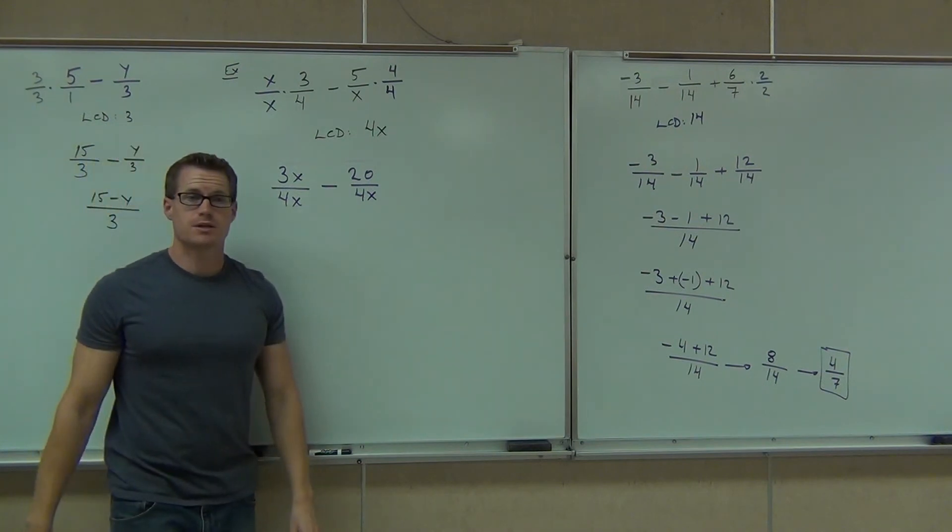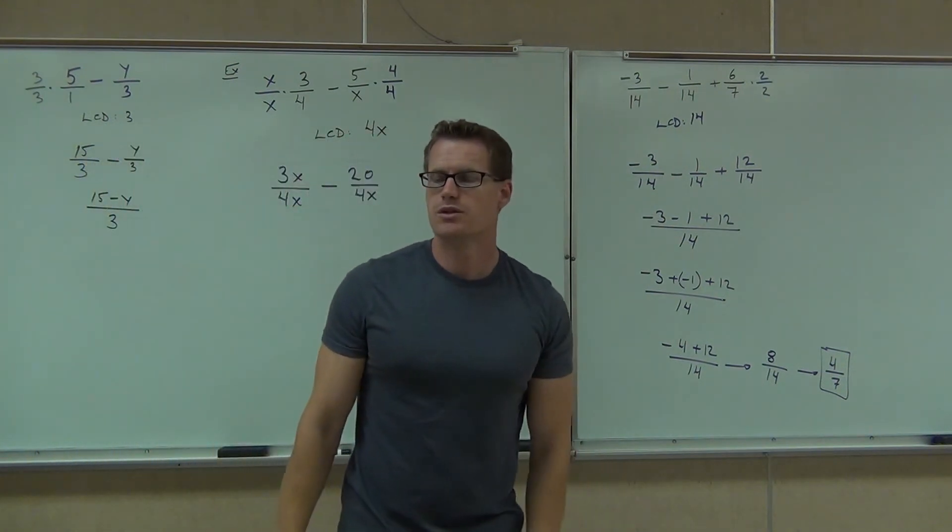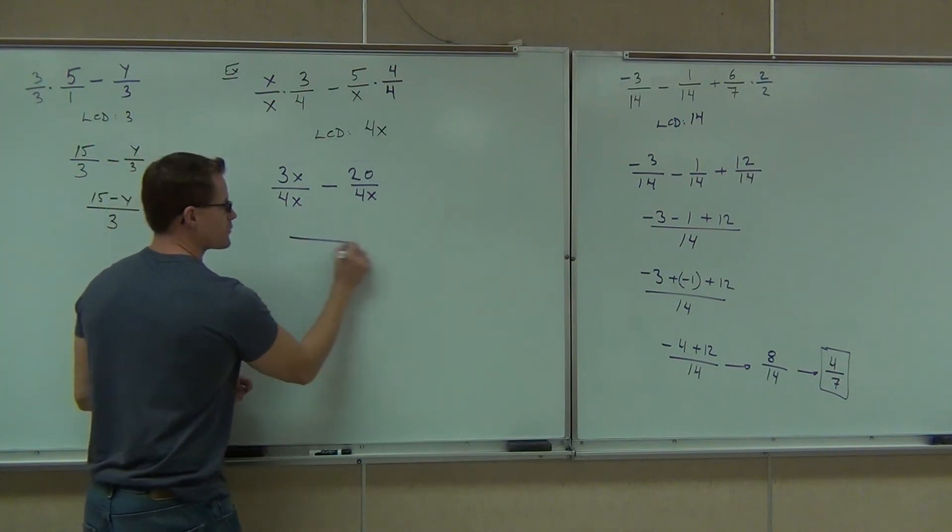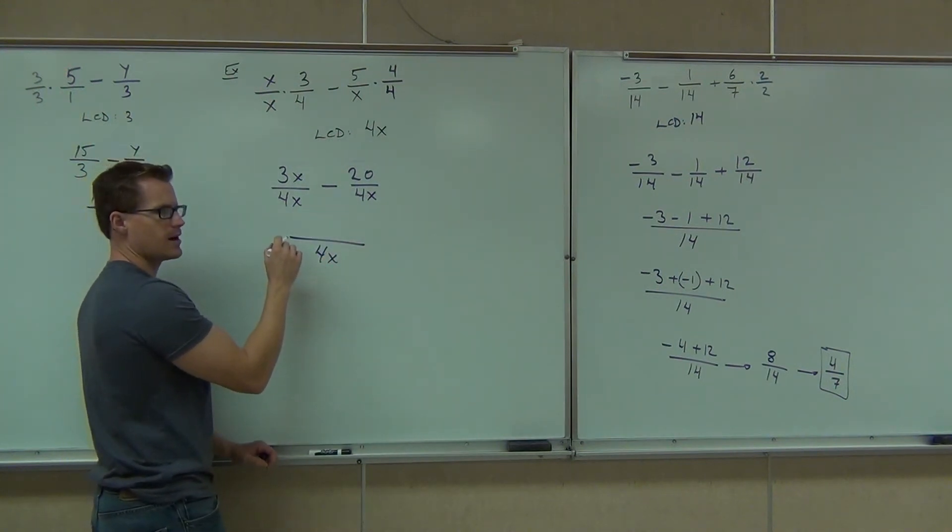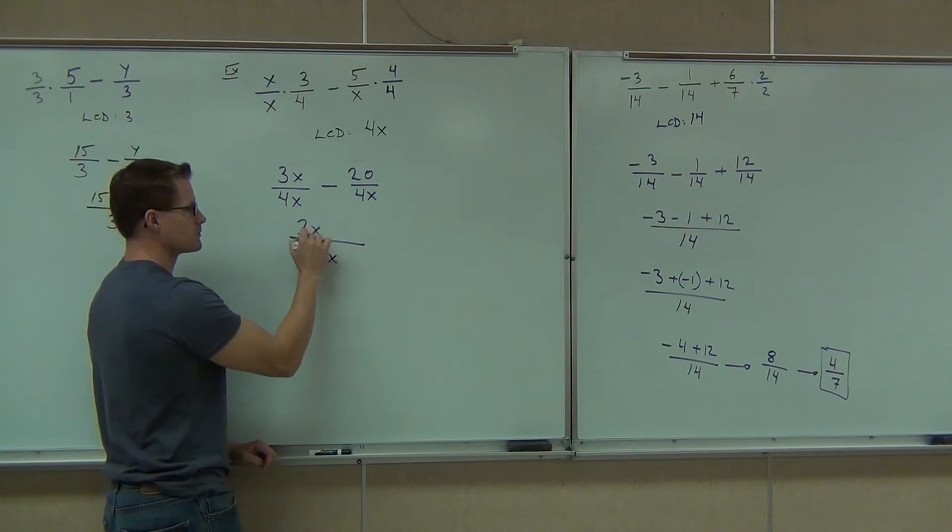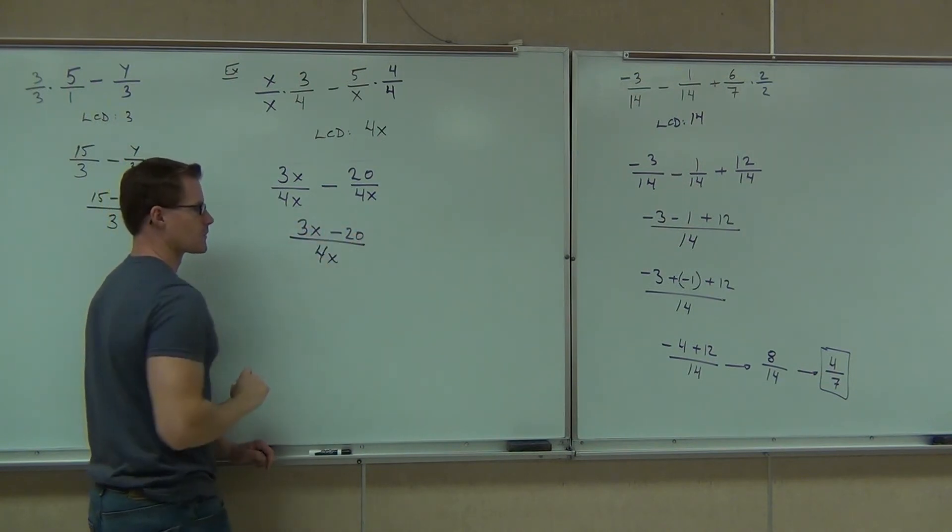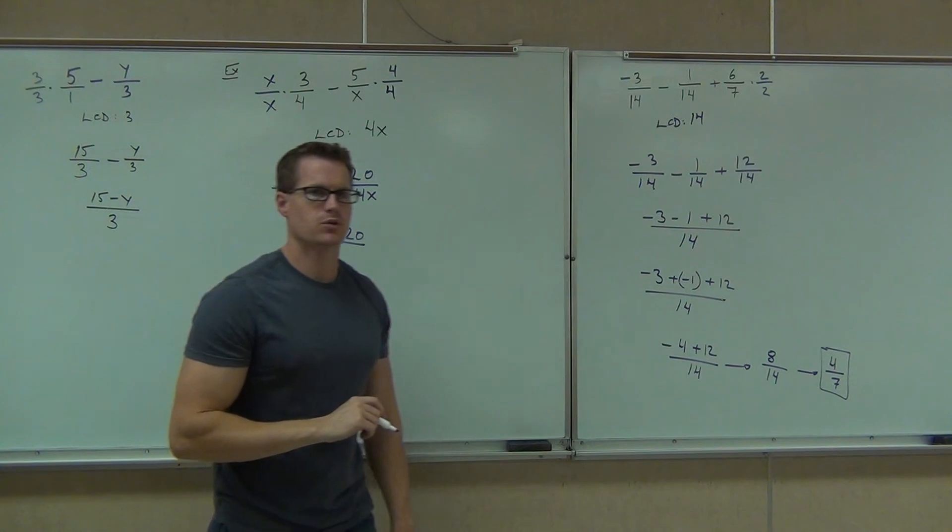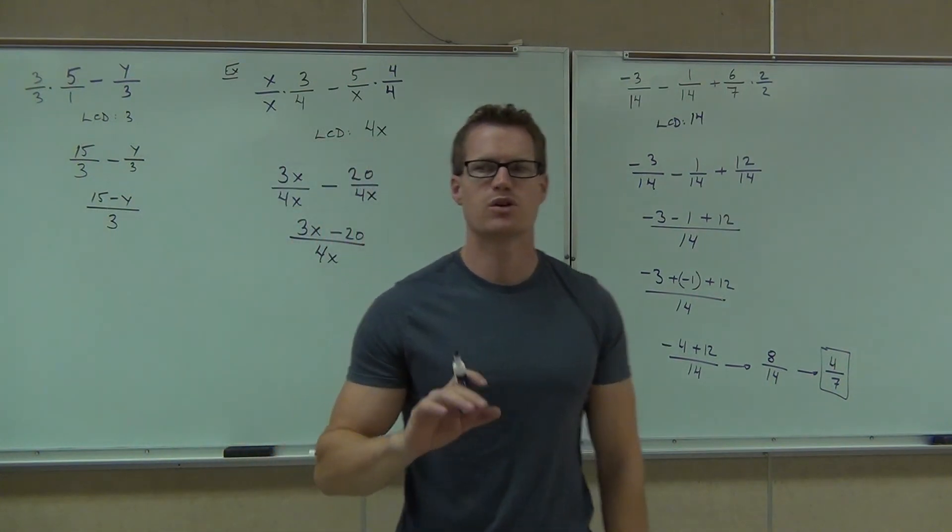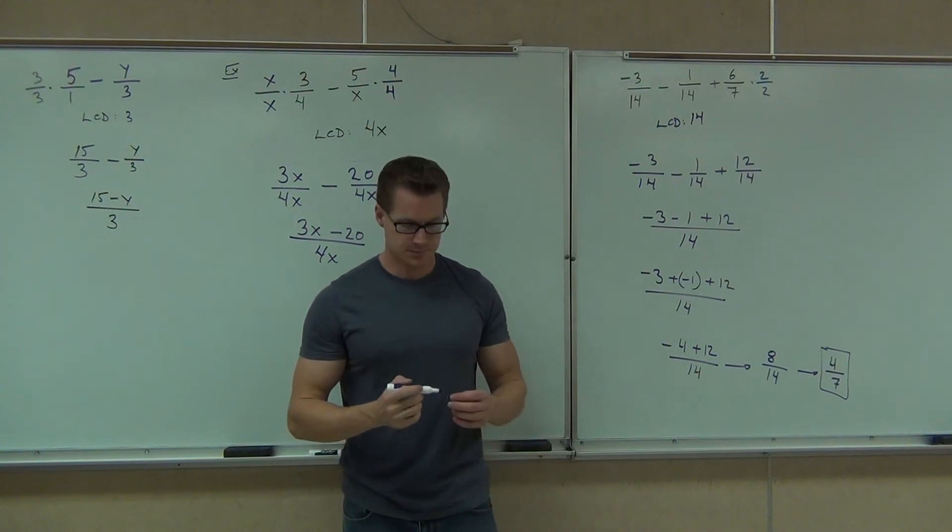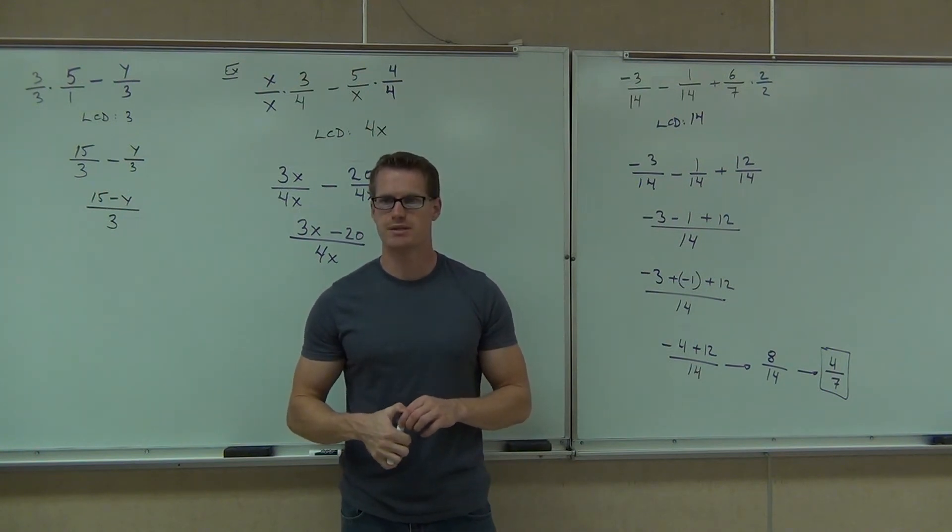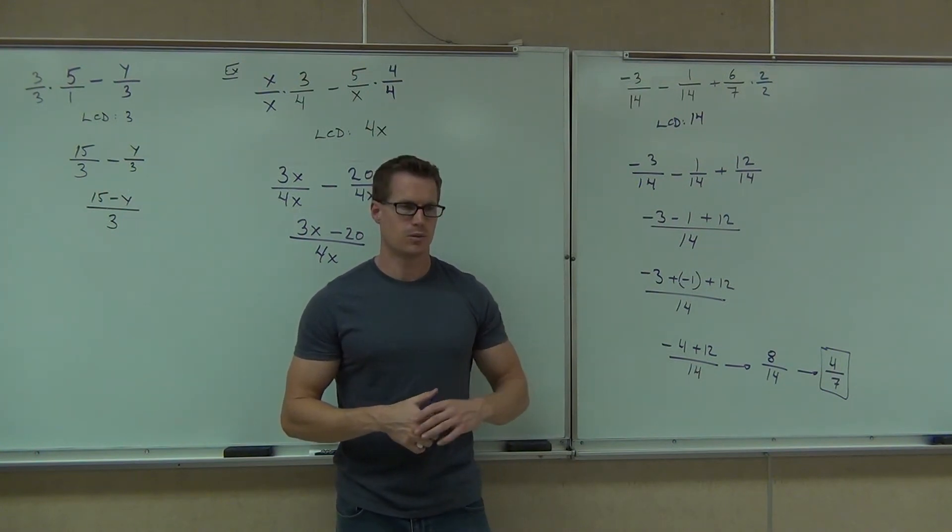Do I have a common denominator like I thought? Yes. So it worked out. So we're going to put this together as one fraction. Of course, we're going to have 4x on the denominator. On the numerator, I'm going to have 3x minus 20. Now, I have one very important question to ask you. Actually, I don't even want you to answer it. I just want you to think the answer in your head.